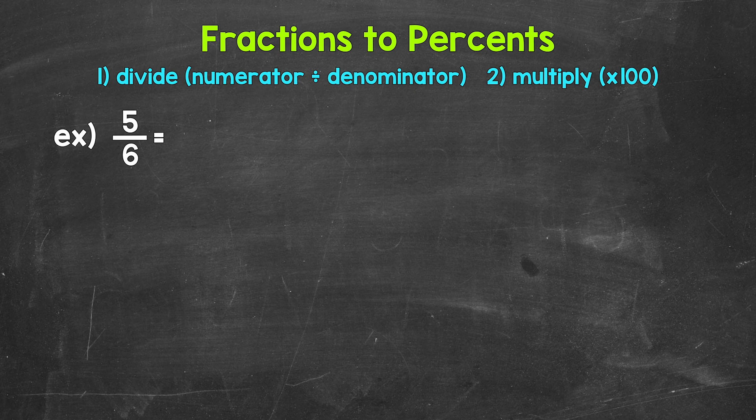Now when we convert a fraction to a percent, we can start by dividing the numerator, the top number of the fraction, by the denominator, the bottom number of the fraction. This will give us a decimal. Once we have that decimal, we convert it to a percent by multiplying it by 100. A quick way to multiply by 100 is to move the decimal twice to the right.